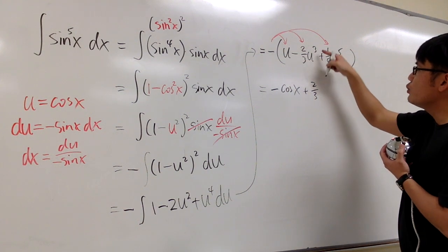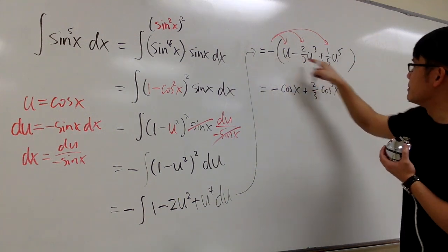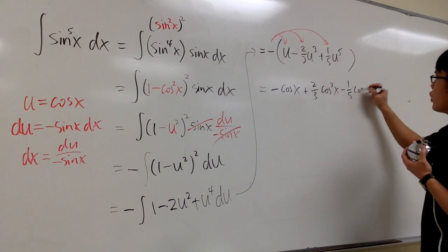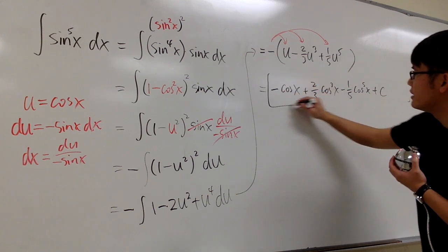2 third, u to the third power, which is cosine to the third power x. And then the last part, negative times 1 fifth, minus 1 fifth. And then the u is cosine and that's to the fifth power x. And we are done. Plus c, this is it.